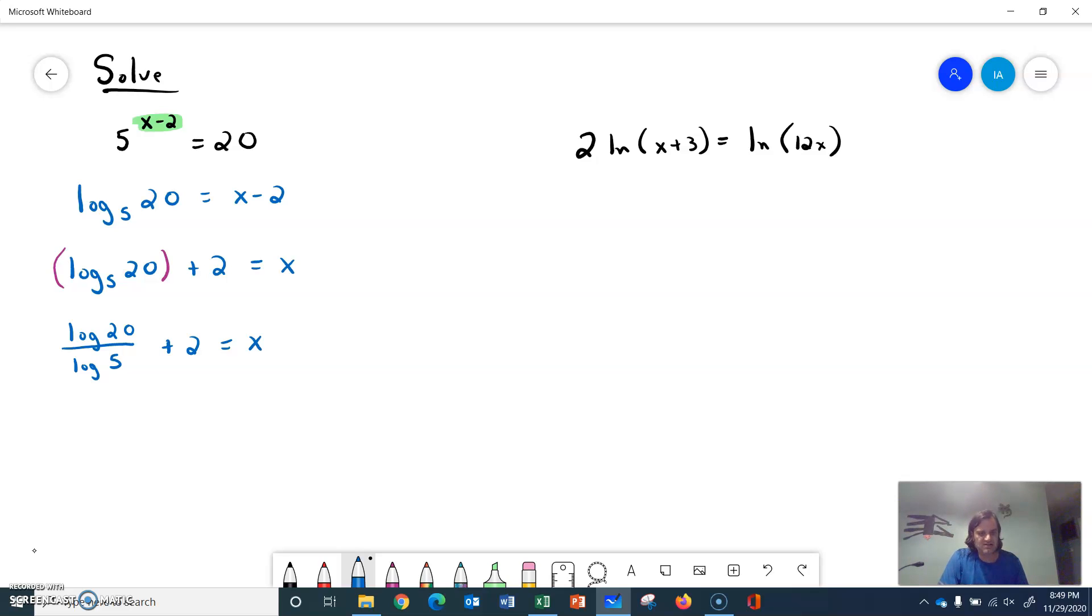So I'm going to round it off to 4 decimal places. And I get 3.8614. And as always, you can take this number, plug it in for the x up here, and see if it balances out.